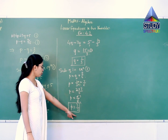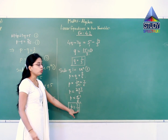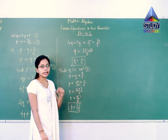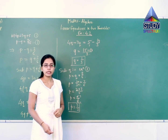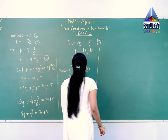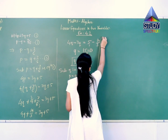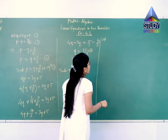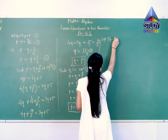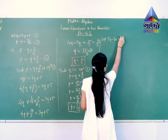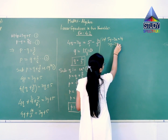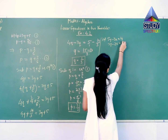In the answer you will write: P is equal to 3 upon 2, Q is equal to 1 upon 3 is the solution of given two equations. Let us solve our next example — example number 4. The question asks us to solve two equations: 5y minus 3x equals 14, and the second equation is 3y minus 2x equals 1.